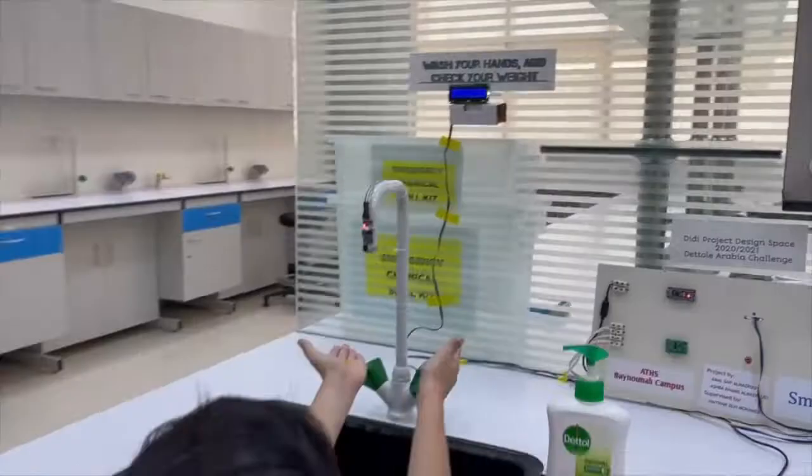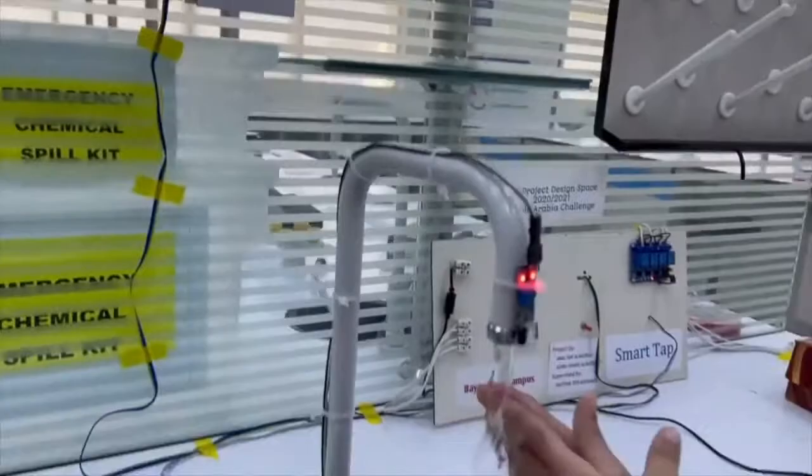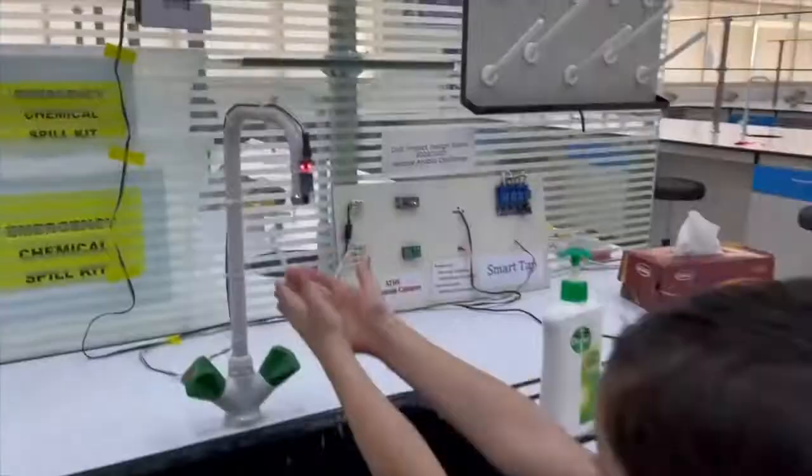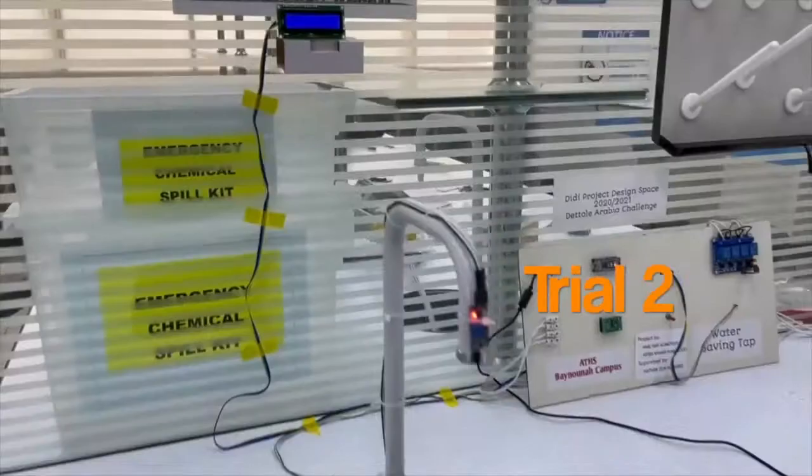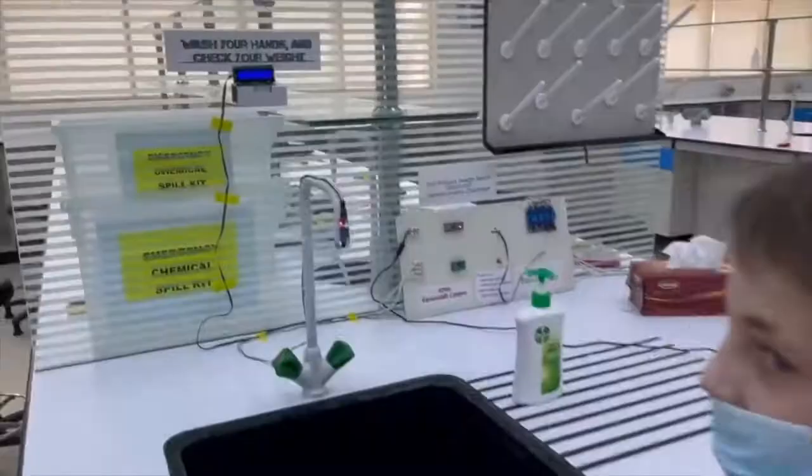Our SmartTab doesn't only measure weight but also controls the amount of water flow according to the user's age, which is converted to average weight. The SmartTab saves water while children are washing their hands. Its water speed increases gradually based on the user's weight.